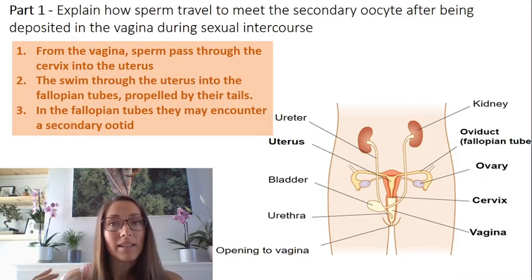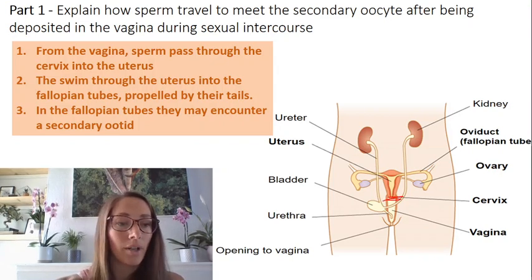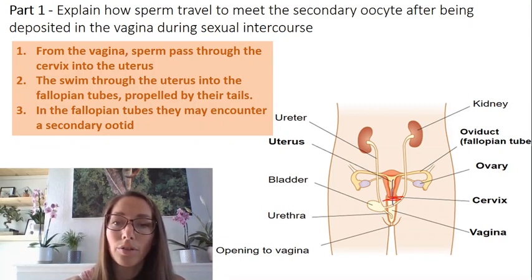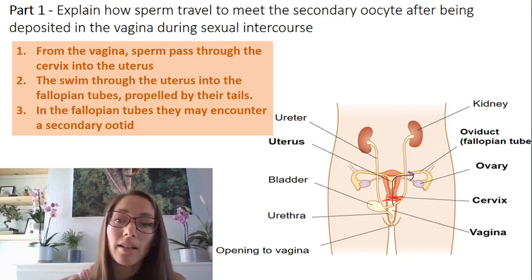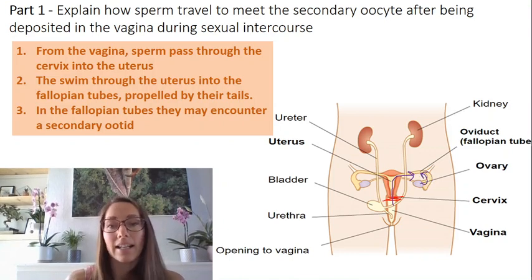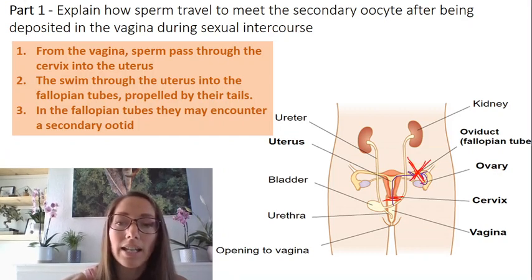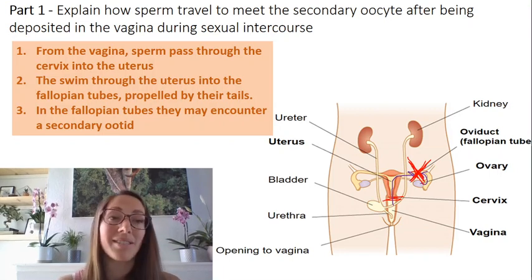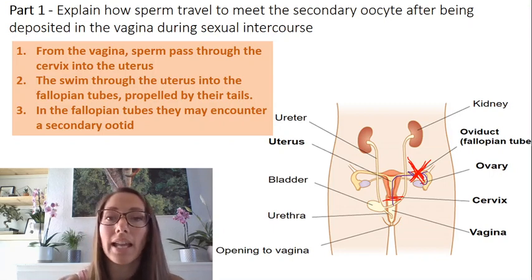To explain how sperm travel to meet the secondary oocyte: after being deposited in the vagina just at the base of the cervix, the sperm swim up through the cervix, through the uterus, and into the fallopian tubes. As discussed in the last lesson on oogenesis, secondary oocytes are released after ovulation and travel down from the ovary. It is at this point in the fallopian tubes where fertilization occurs — where sperm and secondary oocyte meet and, if they fuse, can produce a zygote.